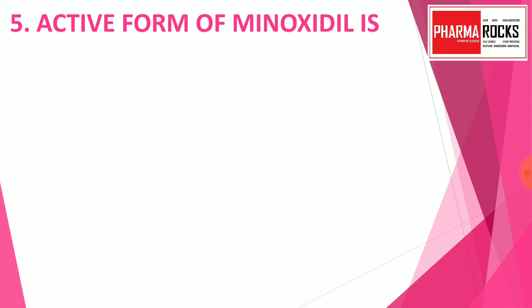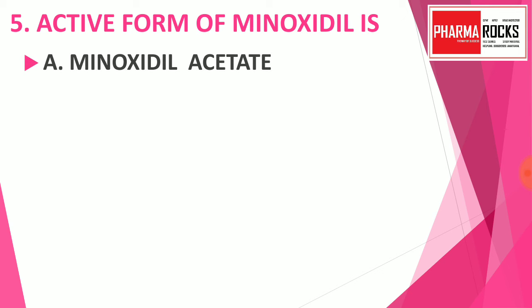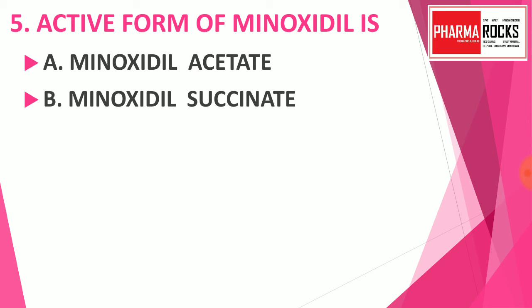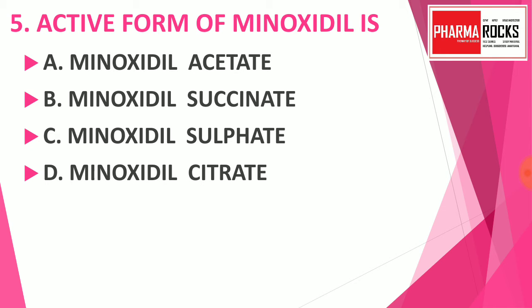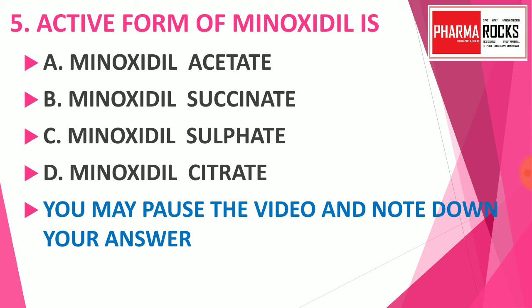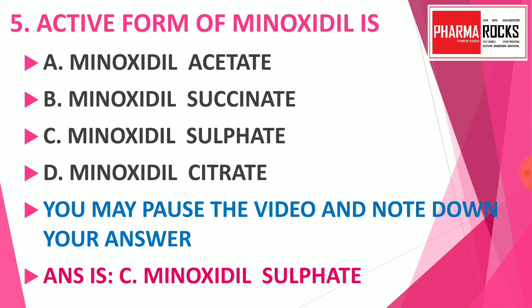Question number 5: The active form of minoxidil is — option A: minoxidil acetate, option B: minoxidil succinate, option C: minoxidil sulfate, option D: minoxidil citrate. You may pause the video and note down your answer. The correct answer is option C: minoxidil sulfate. Minoxidil sulfate is the active form of the drug minoxidil.